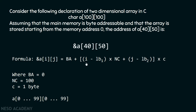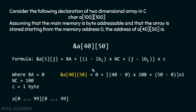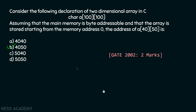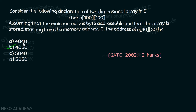Replacing these values in the formula, I get 4000 plus 50, which is equal to 4050. Therefore, the address of A[40][50] is 4050. Hence, option B is the correct answer.